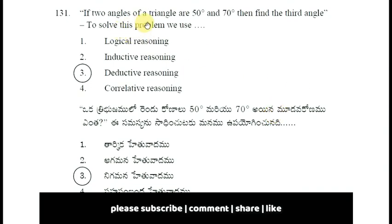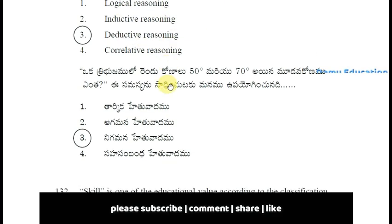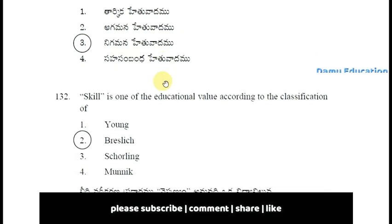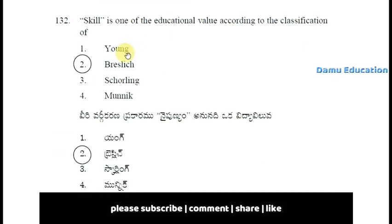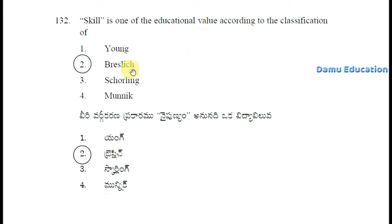If two angles of a triangle are 50 degrees and 70 degrees, then find the third angle. To solve this problem we use detective reason skill, which is one of the educational values according to the classification of Breslich.